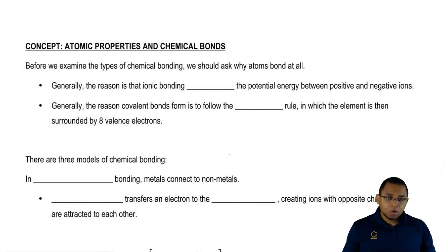Before we learn the different types of chemical bonds, we have to first ask ourselves, why do elements want to form bonds in the first place?